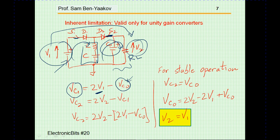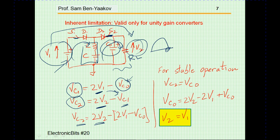As S2 is turned on, the discharging process of the capacitor proceeds — current goes up and then stops — and we end up with a capacitor voltage Vc sub two equal to 2V2 minus Vc sub one. Plugging in the value of Vc sub one, we find that Vc sub two — the final capacitor voltage after both switches have turned on and off — will be 2V2 minus 2V1 plus Vc sub zero.